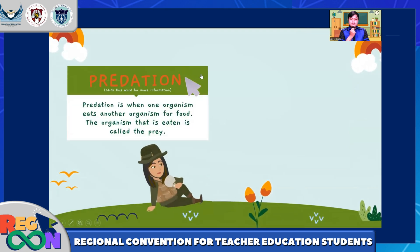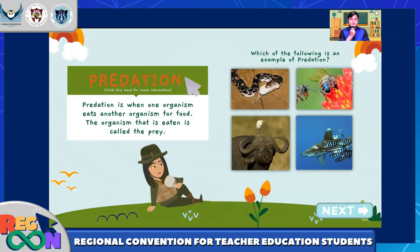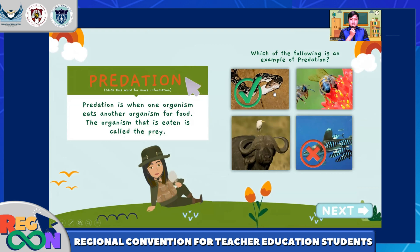Predation is when one organism eats another organism for food. The organism that is eaten is called the prey. Based on that definition, can you choose the right example for predation? If you chose incorrectly: 'Sorry, but this is not the correct example. Please try again.' If correct: 'Great! Examples of predation are snakes that eat rodents and lions that eat deer.'